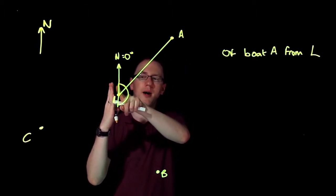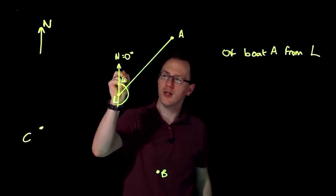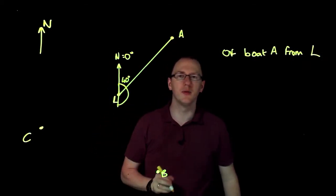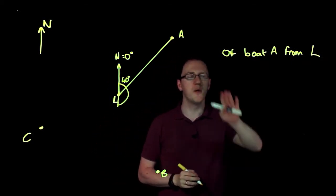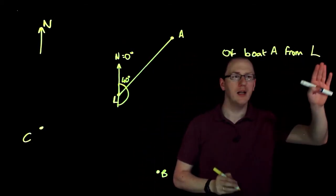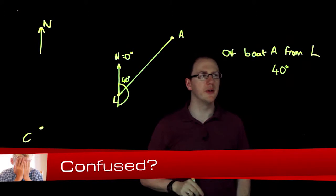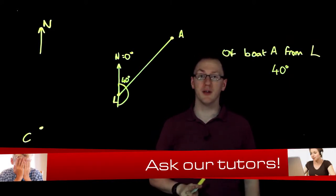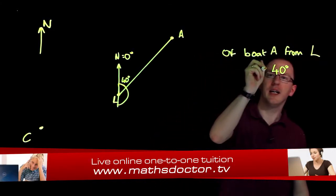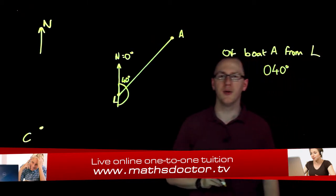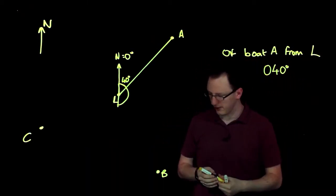I'm going to read around zero, 10, 20, 30. This is about 40 degrees. So that angle would be about 40 degrees. So the bearing of boat A from L is 40 degrees, but that fails one of our rules, because there should be three figures. So if it's 40 degrees, I need to precede that with a zero. So it's 040.